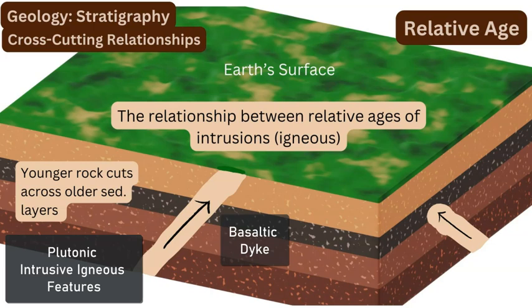The next principle is called cross-cutting relationships. This is a follow-on principle in stratigraphy, requiring understanding of the four previous principles — superposition, horizontality, continuity, and uniformitarianism — to figure out the relationship between an intruded or added layer of generally igneous rock cutting up through pre-existing sedimentary rock layers, as shown in the diagram. You can then figure out the age of both the igneous intrusion or dike and the surrounding rock layers.